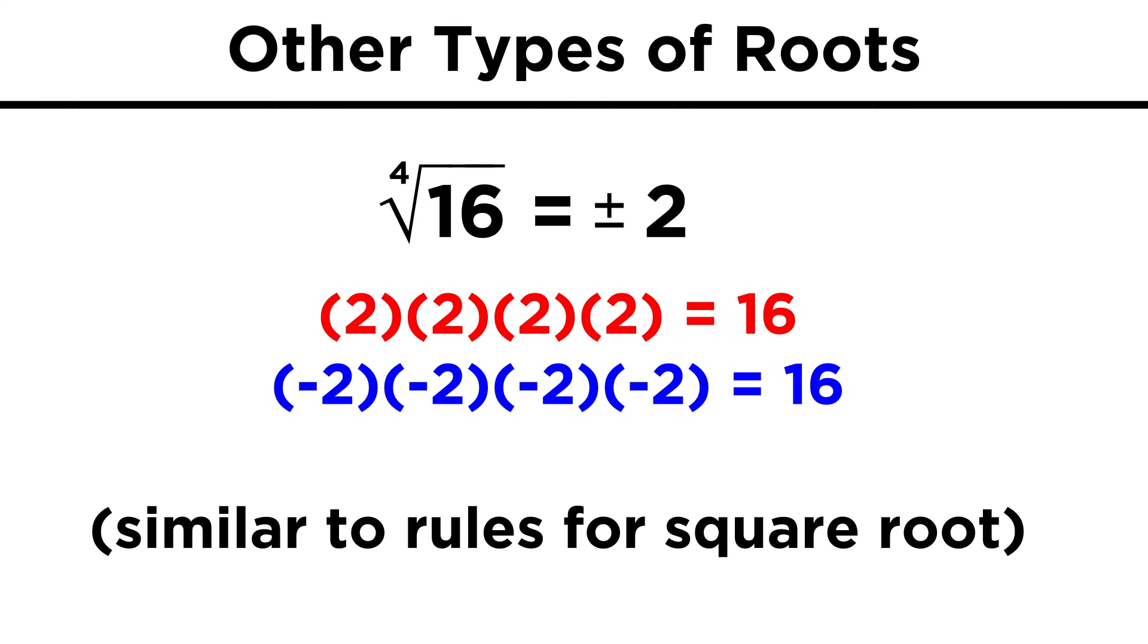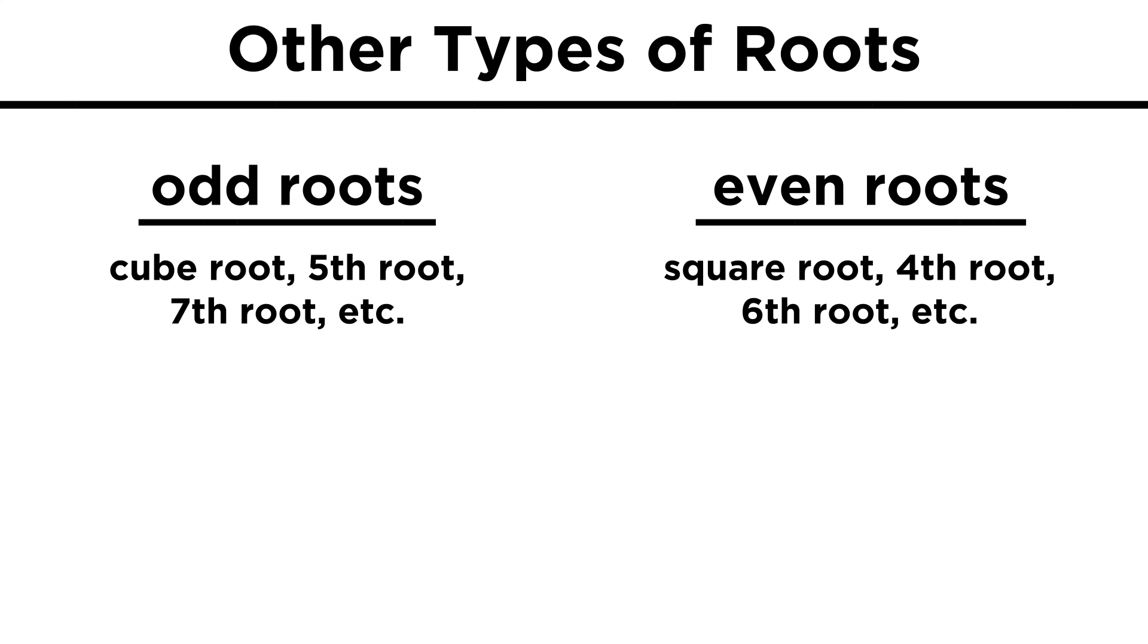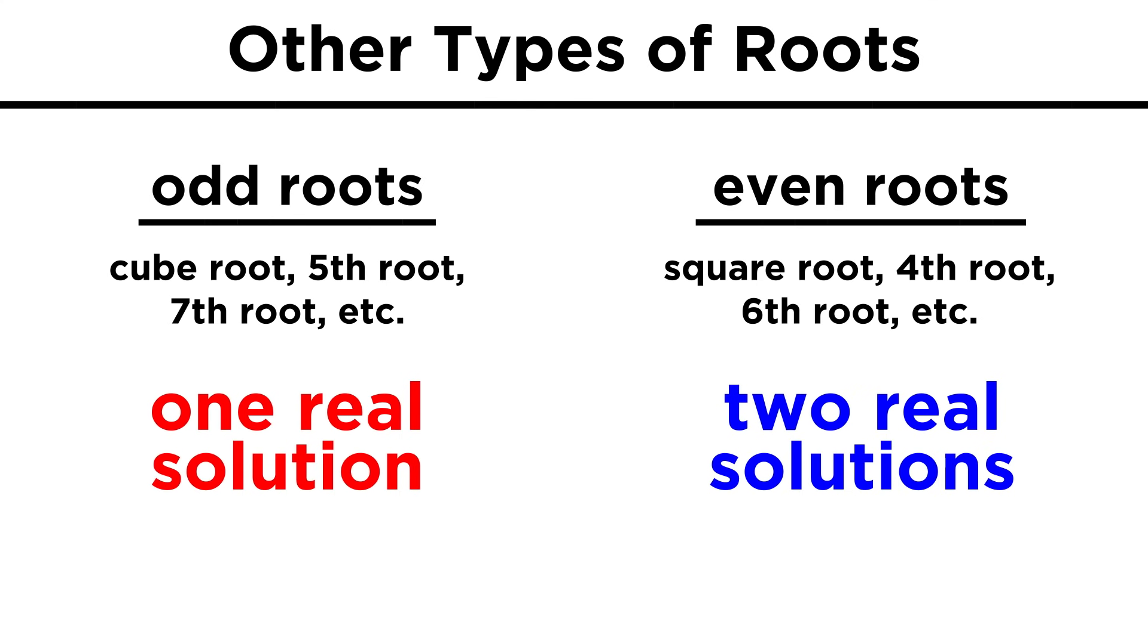If we take the fourth root of something, we see that the rules are similar to square roots, in that we can't take the fourth root of a negative number, because multiplying a negative value four times gives us a positive value. Taking the fifth root sees us going back to rules like for the cube root. We alternate back and forth depending on whether the root is odd or even. Odd roots have one real solution, and even roots have two real solutions. For now, we just have to accept this, but later we will get a more satisfying explanation.